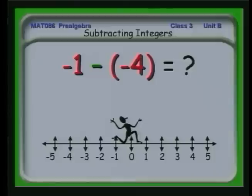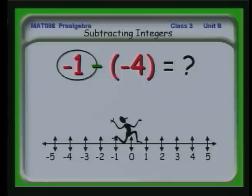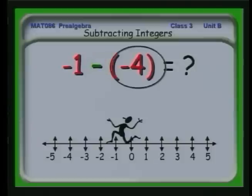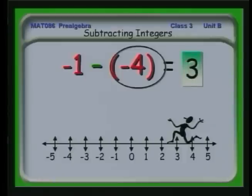Here's another interesting example where all the signs are negative. We start with our friend at 0. Minus 1 tells him to back up 1. A minus here says turn around. Then minus 4 says back up 4 from that position, and we wind up at 3. So minus 1 minus a minus 4 is exactly the same as minus 1 plus 4, which gives us 3.